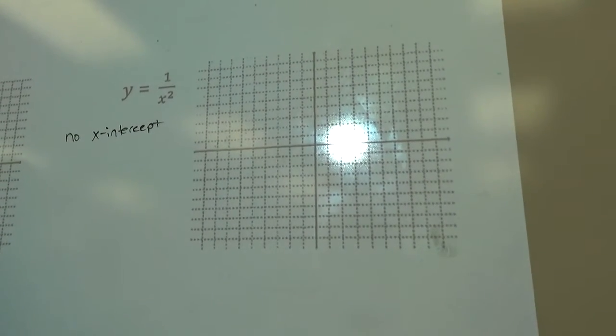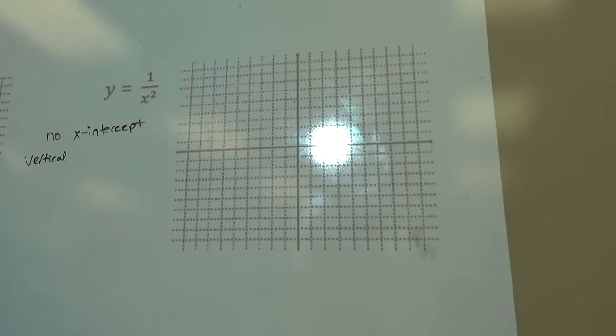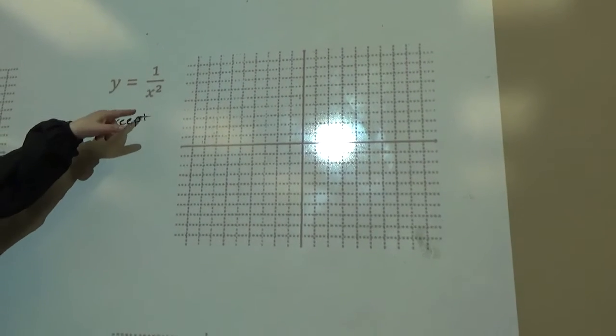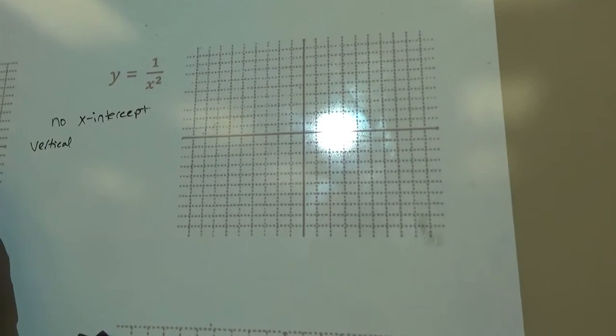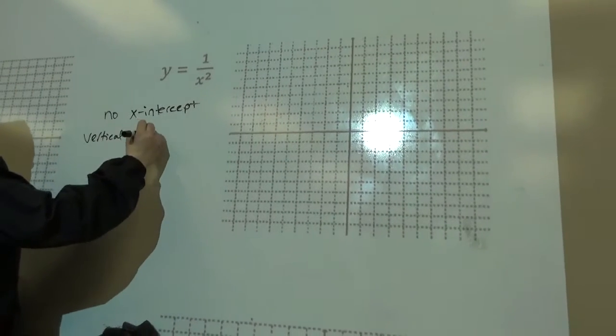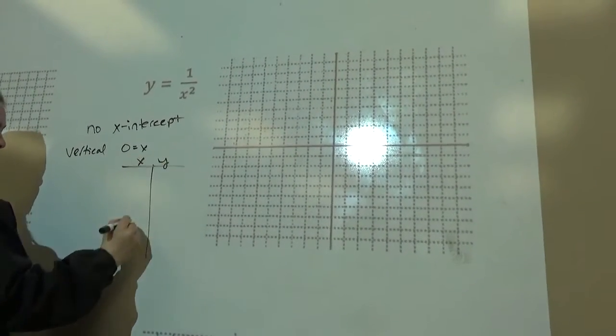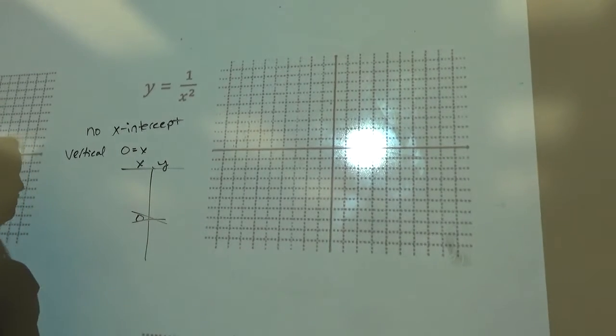Let's think about our vertical asymptote. How do you find the vertical asymptote? The zeros of the denominator. So what number can we not put in for x? Zero. So I know that when I make my table, right next to zero, there will be nothing there.